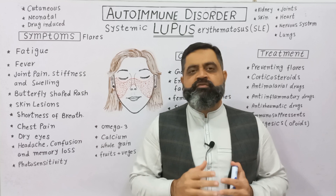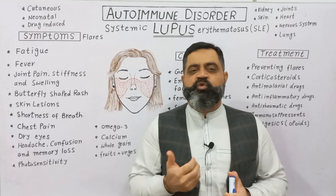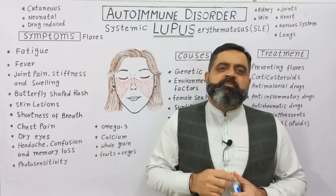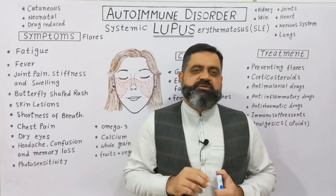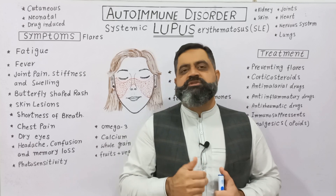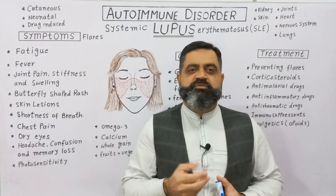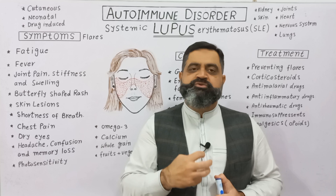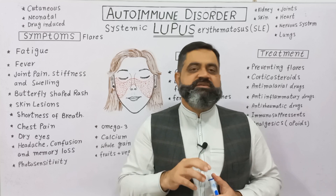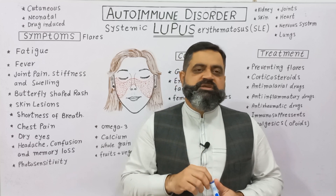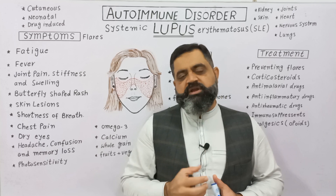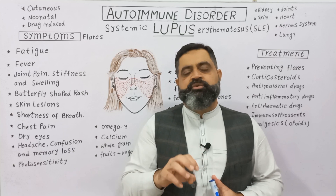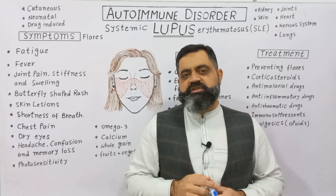The immune system protects our body from the harms of pathogens like viruses, bacteria, fungi, etc. But sometimes it happens that our immune system becomes so sensitive due to some genetic problem or environmental factor that it backfires on our own tissues and organs, and as a result our body organs and tissues can get destroyed by our own immune system. That is why this disease is known as an autoimmune disorder.